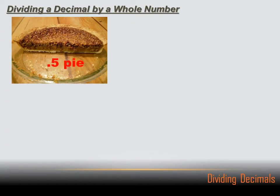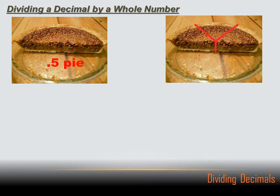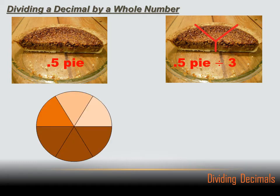Okay, I've got a half a pie and I need to divide it into three pieces. Half a pie sliced into three pieces. That's the same thing as .5 pie divided by three. Well, let's look at a pie chart and see if that helps us understand what's going on here.